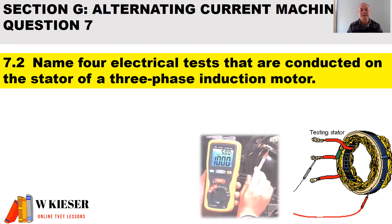In part two of question 7, name four electrical tests that are conducted on the stator of a three-phase induction motor. For testing the insulation of each stator winding, we use a megger. We set the megger to about 500 volts DC, hit the test button, and a good reading should indicate above one mega ohm.